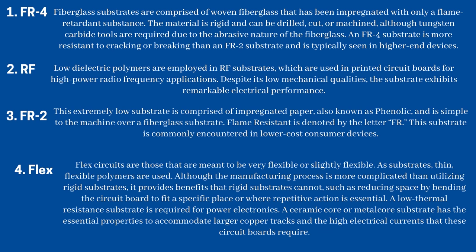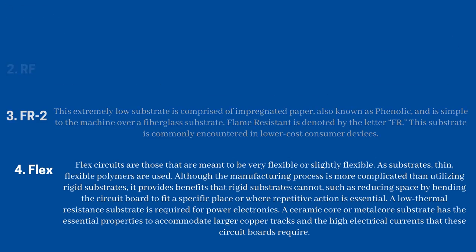FR-2 is an extremely low-cost substrate comprised of impregnated paper, also known as phenolic, and is simpler to machine than a fiberglass substrate. FR stands for flame-resistant. This substrate is commonly found in lower-cost consumer devices. Flex circuits are those meant to be very flexible or slightly flexible, using thin flexible polymers as substrates. Although the manufacturing process is more complicated than using rigid substrates, it provides benefits such as reducing space by bending the circuit board to fit a specific place or where repetitive action is essential. For power electronics, a low thermal resistance substrate is required — a ceramic core or metal core substrate has the essential properties to accommodate larger copper tracks and the high electrical currents these circuit boards require.